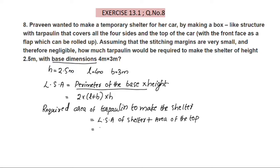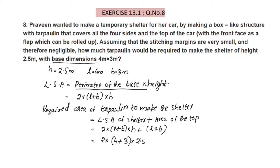Required area = LSA of the shelter + area of the top = 2 × (L + B) × H + L × B. Substituting: 2 × (4 + 3) × 2.5 + 4 × 3.